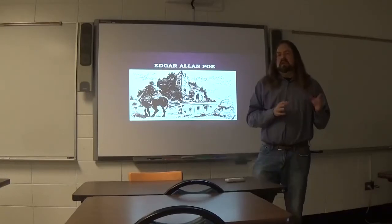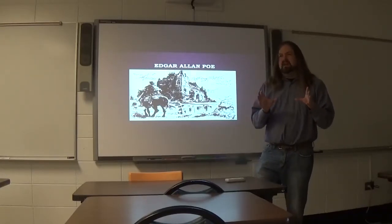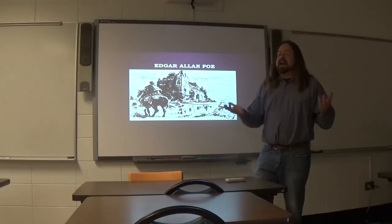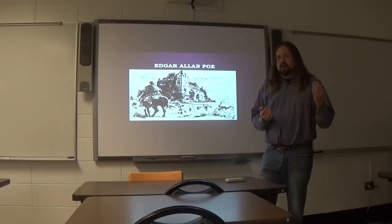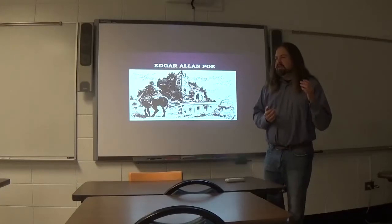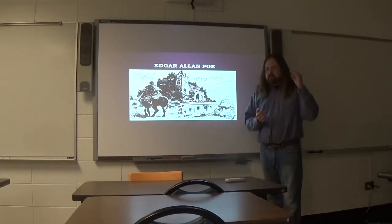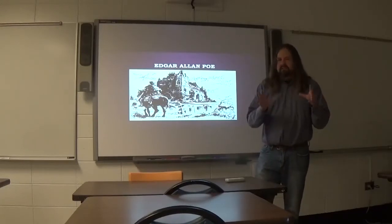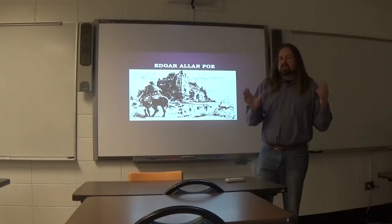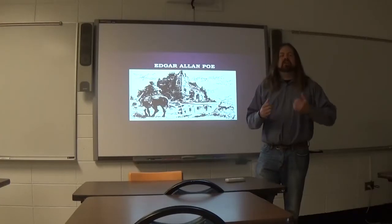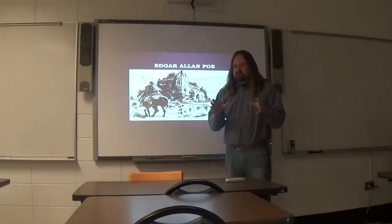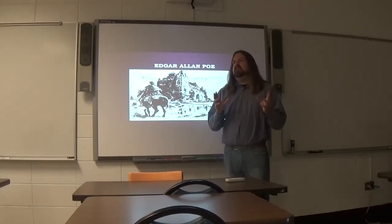We'll be looking at two short stories. Most of the time we're going to spend on The Fall of the House of Usher, which is probably the most classically Gothic of Poe's tales. We're also going to look briefly at The Masque of the Red Death because the final encounter between Prince Prospero and his guests and the reveler representing the Red Death really does prefigure much of what's going to happen in the weird.